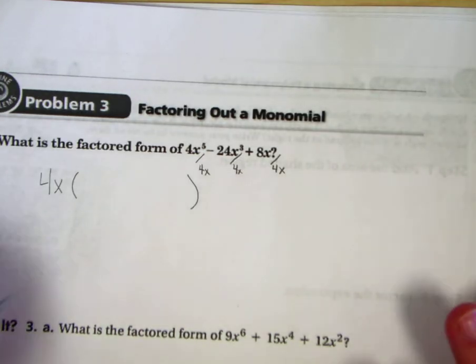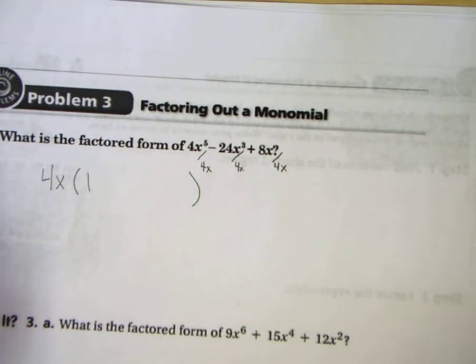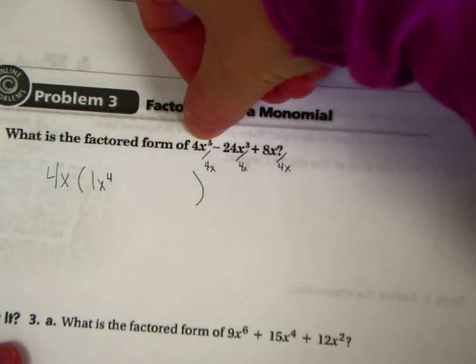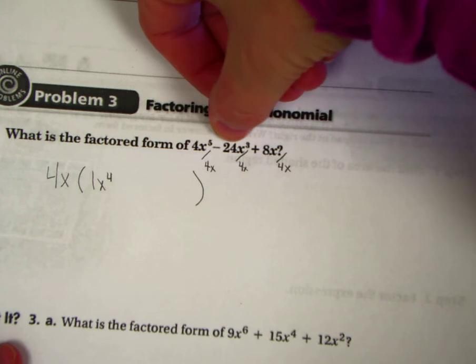So 4 divided by 4 is 1. x^5 divided by x is x^4. Okay, so I pulled out a 4, and I pulled out an x. We're going to do that again.